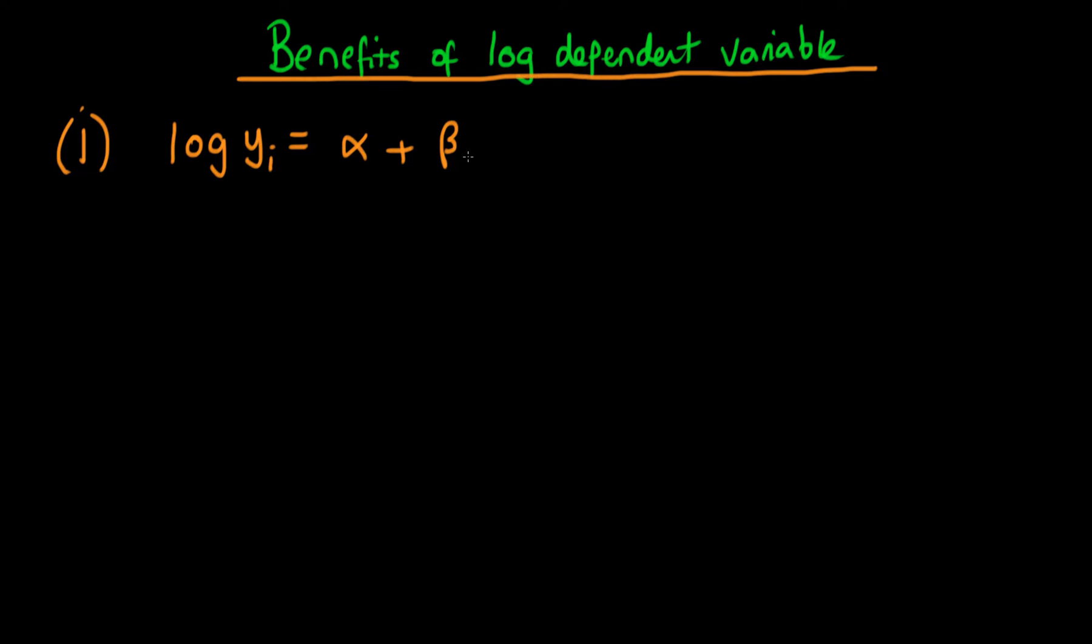So I have log yi equal to alpha plus beta 1 times x1i plus beta 2 times x2i all the way through to beta p times xpi. So what's one of the benefits to doing this?